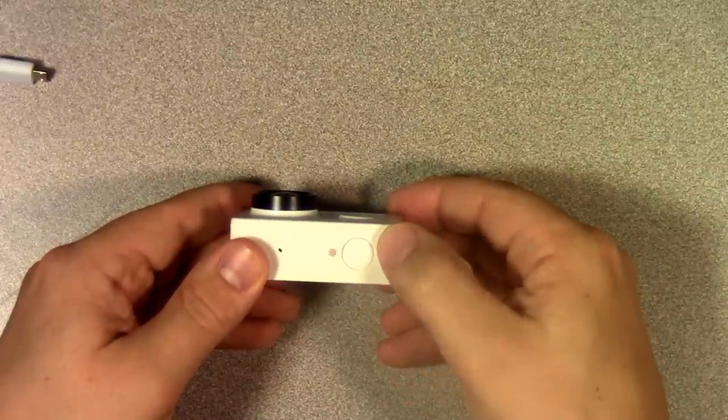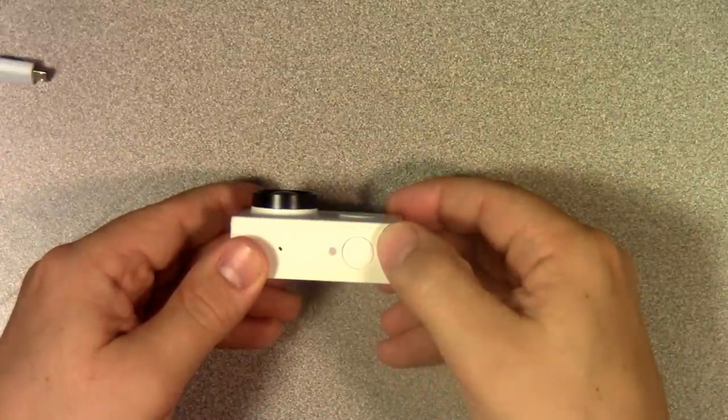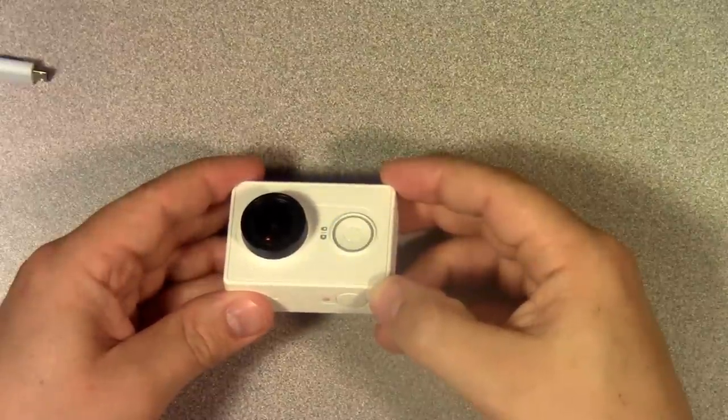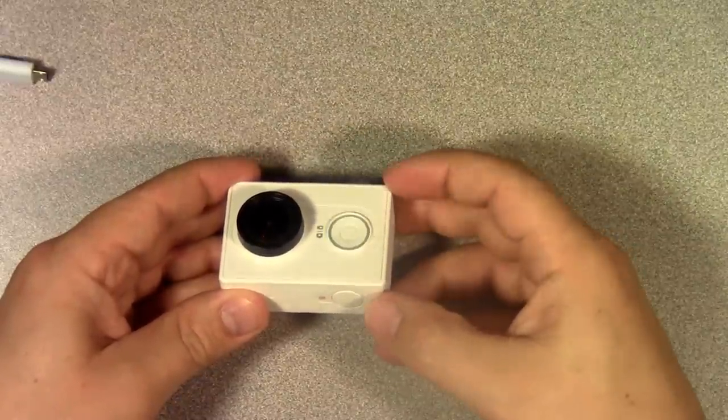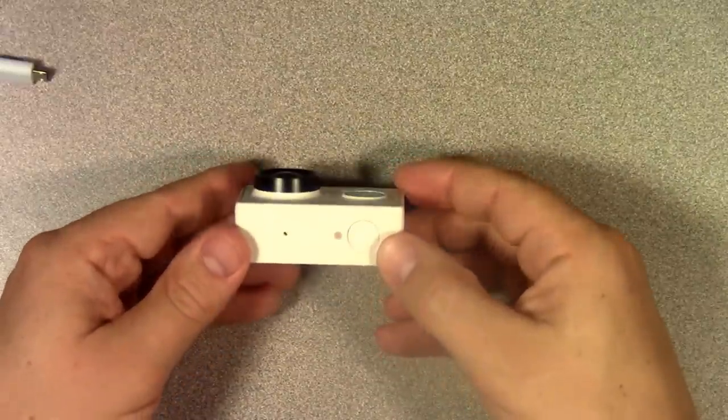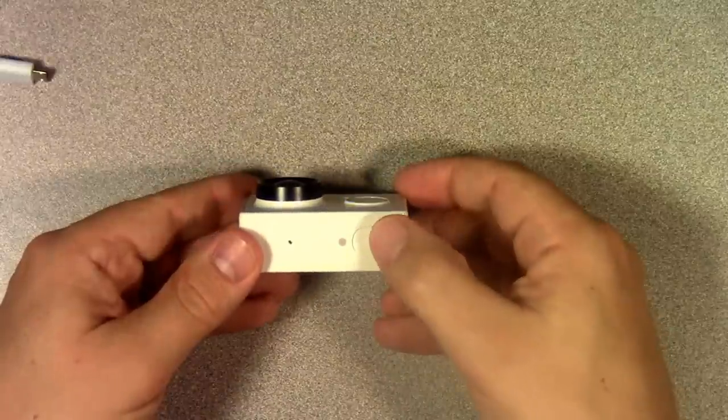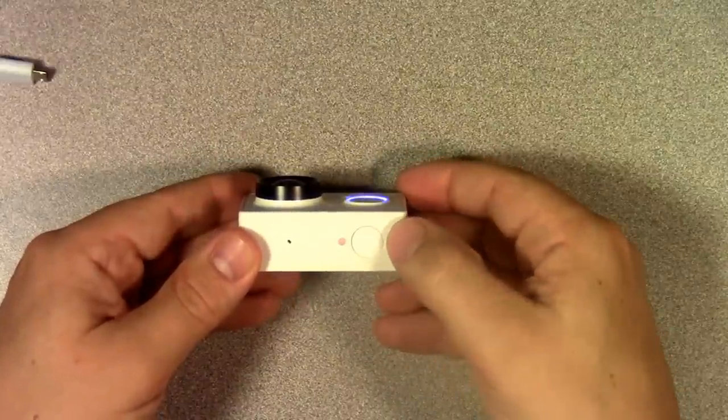So go ahead and press that button and you'll notice that that light is now blinking. Also the ring on the front is blinking and that tells us that it's currently recording video. Then to stop recording, we simply tap the button again.